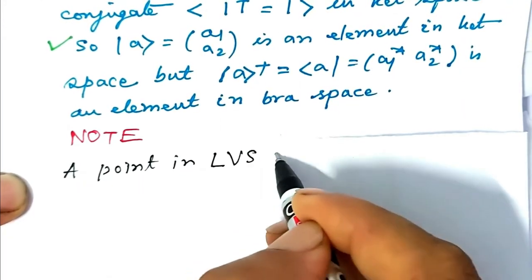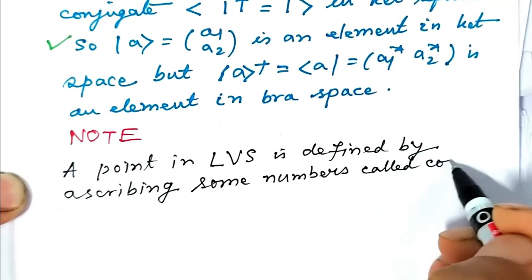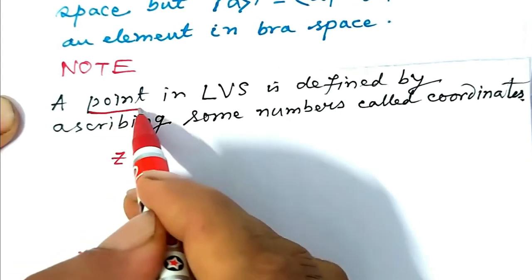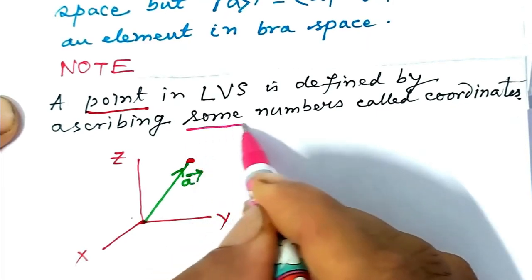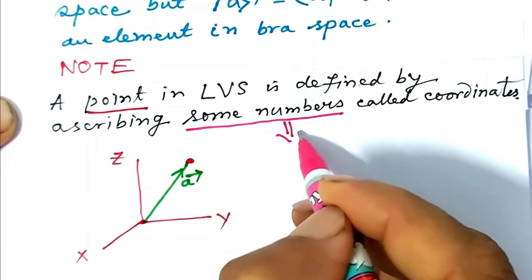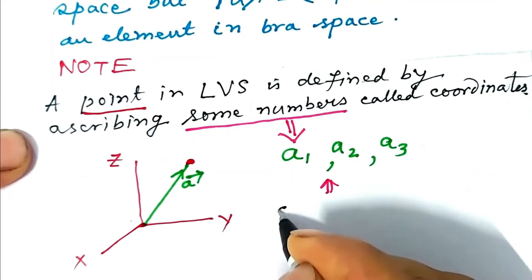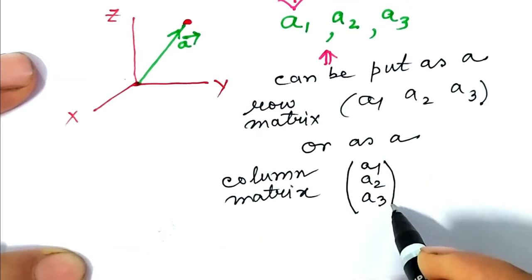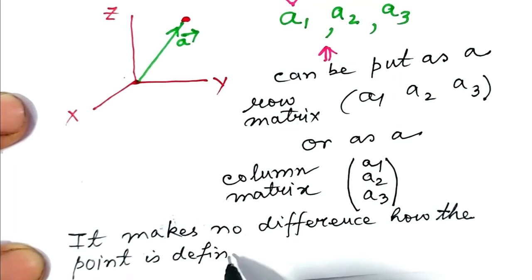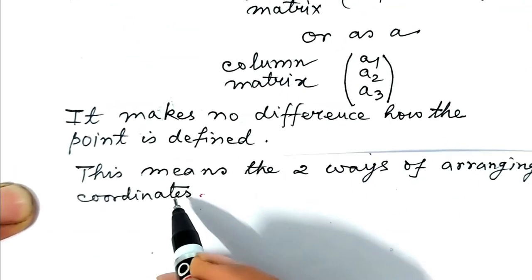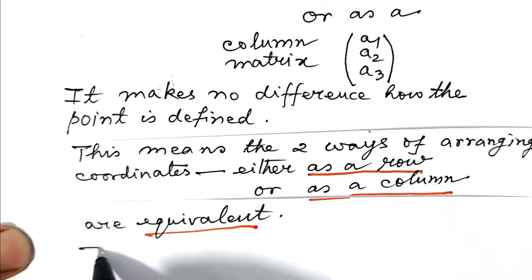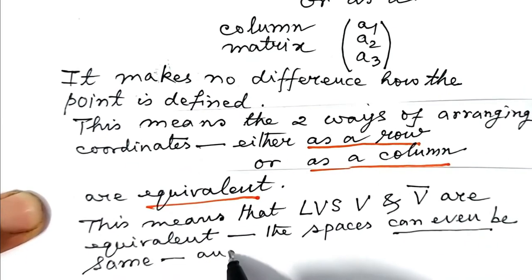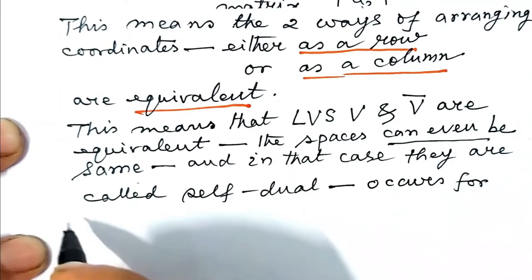A point in a linear vector space is defined by ascribing numbers called coordinates. For a vector A in 3D space (x, y, z axes), its coordinates a1, a2, a3 can be arranged as a row matrix (a1, a2, a3) or a column matrix — it makes no difference how the point is defined. This means linear vector space V and its dual V-bar are equivalent. The spaces can even be the same, in which case they are called self-dual — this occurs for Euclidean space Rn.